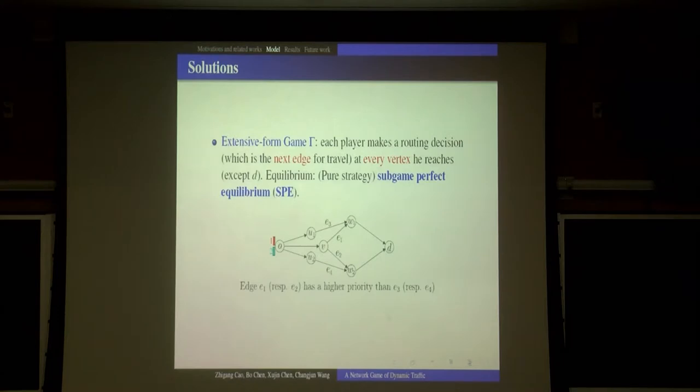Let's look at a very simple example to make it clear. Suppose this is a network and each edge has unit capacity and unit length. There are only two players, player one and player two. Player one has higher original priority than player two. That means if they use the same edge, then player one will enter first from O.